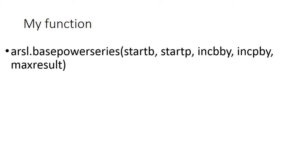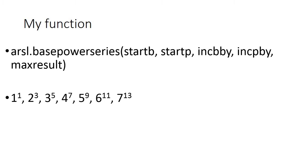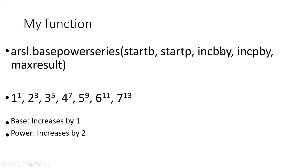The function has four arguments: start_b, start_p — where b means base and p means power — inc_b_by, inc_p_by (that is, increase in base by and increase in power by), and then the maximum result. For example, this is a series and you want to find it out: the base is increasing by 1 and the power is increasing by 2. Let me explain what these arguments mean.